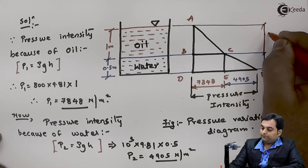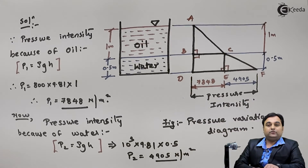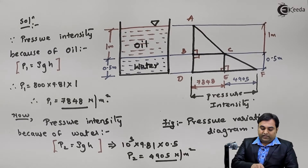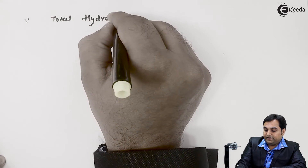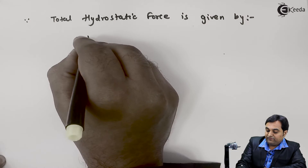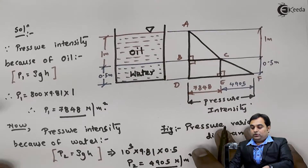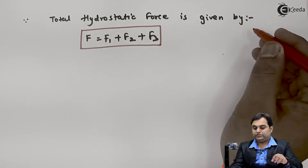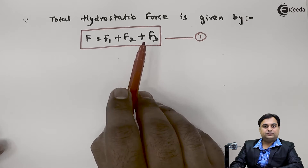With the help of this pressure intensity diagram we would be calculating the hydrostatic force. The concept is that we are calculating the hydrostatic force at the bottom of the tank using this pressure diagram. The total hydrostatic force is given by F = F1 + F2 + F3, since we have two right-angle triangles and one rectangle in the pressure diagram. I'll call this equation 1, and calculate each value separately.